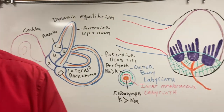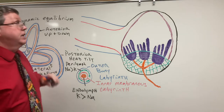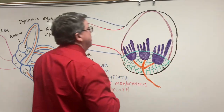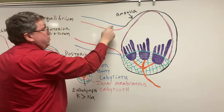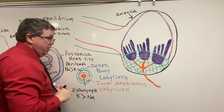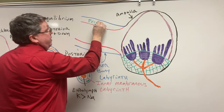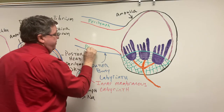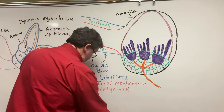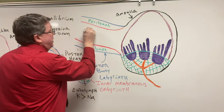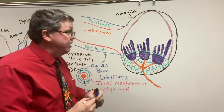Here is my ampulla — this enlarged part right here. The blue part is my outer bony labyrinth. Inside we have perilymph, and then inside the inner membranous labyrinth we have endolymph. I'm going to label the crista ampullaris inside here. The crista ampullaris is basically this whole structure — these are nerves coming off of hair cells.